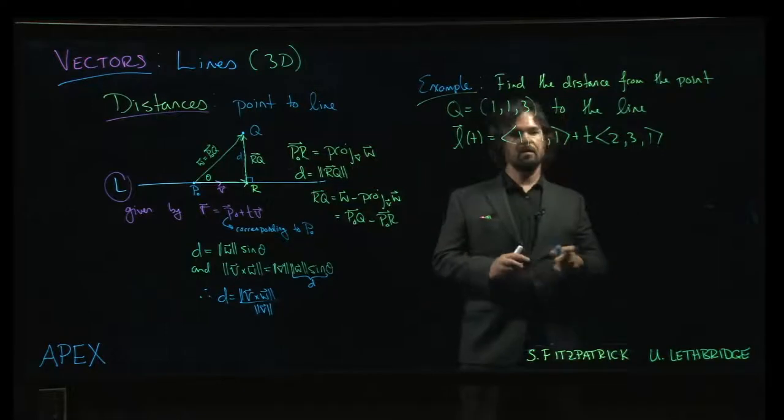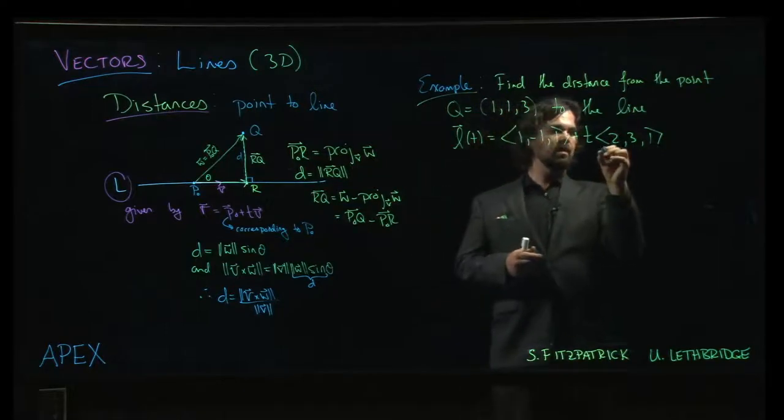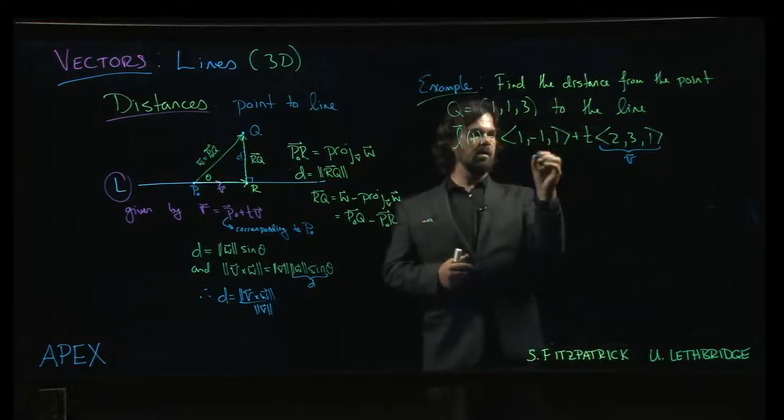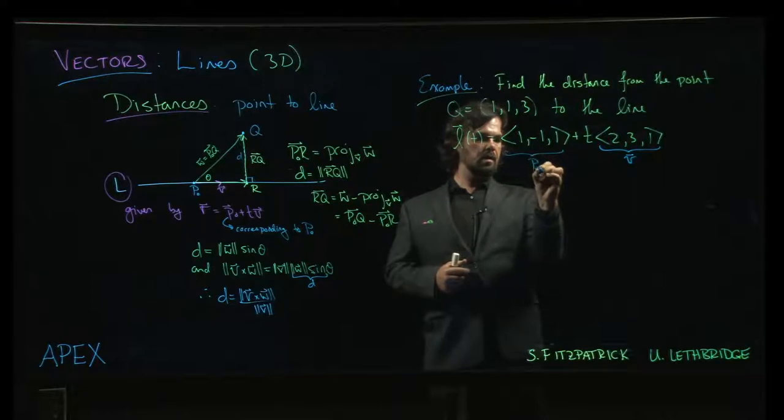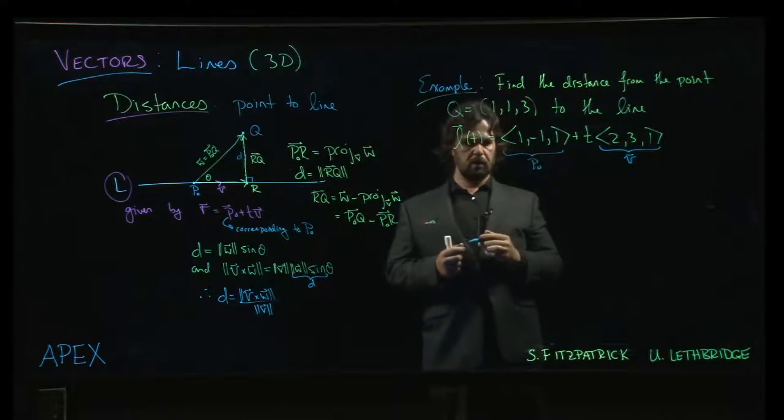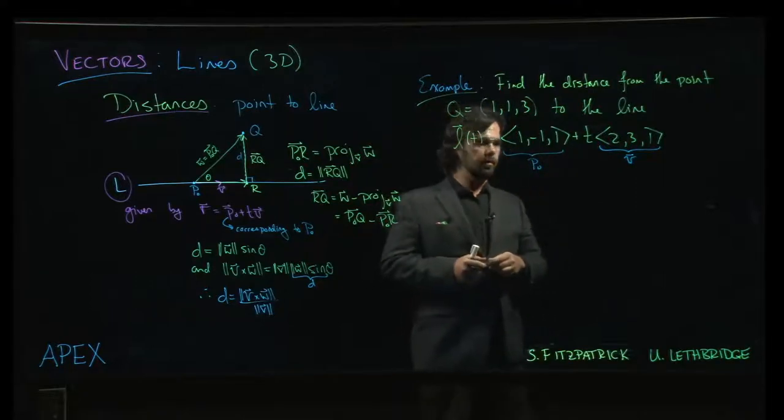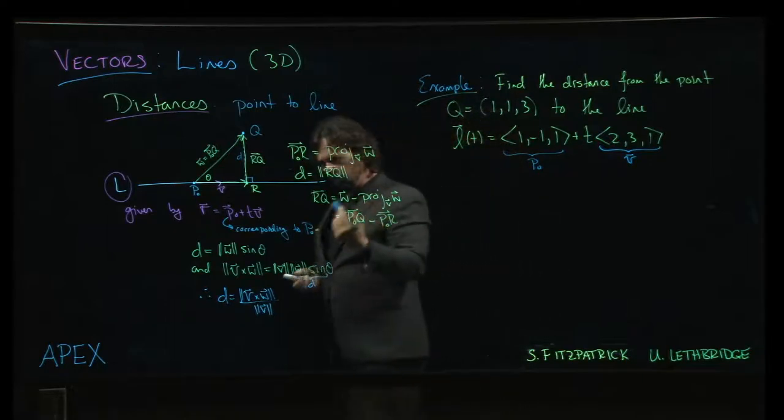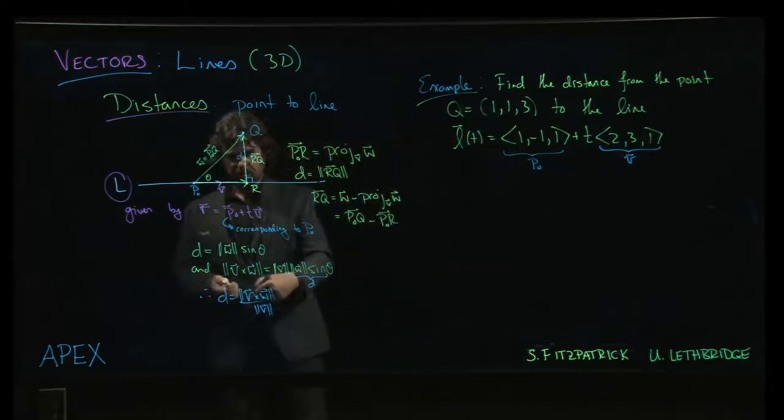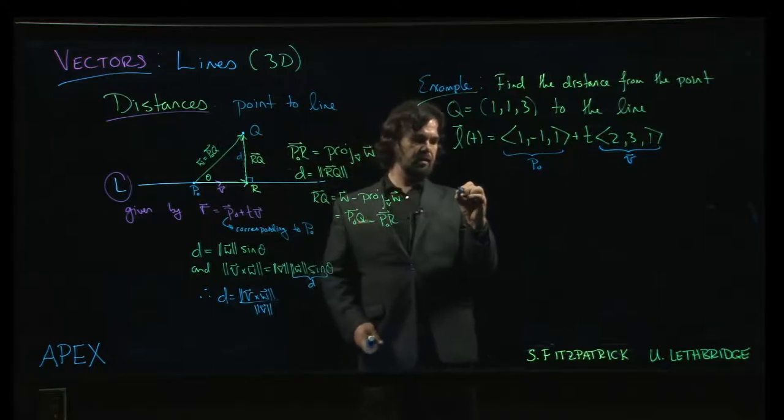So we know that this 2, 3, 1 here, that's the direction of our line. 1 minus 1, 1, that gives me this initial point on the line. And so if I want to just use the formula here, well the first thing I need is this vector w.